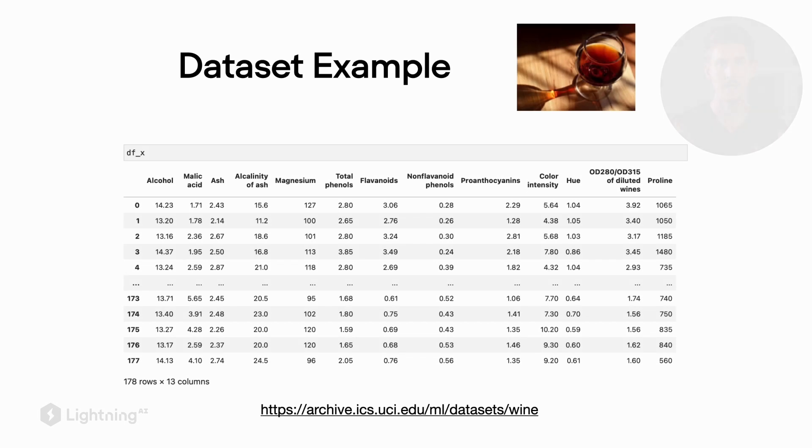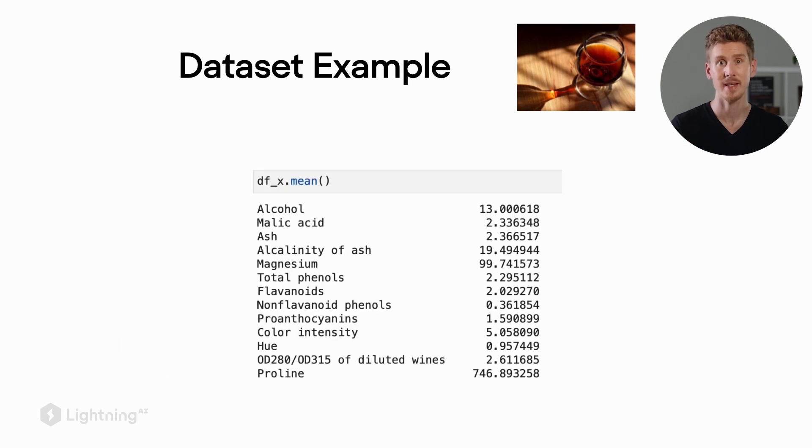In the previous video we discussed why normalization is important. Now let's take a look at two of the most common normalization techniques. Here again we have the wine dataset as an example where we have features on various different scales.